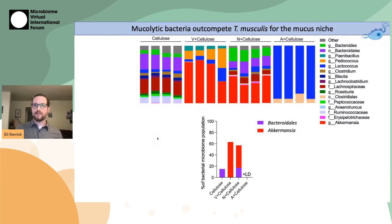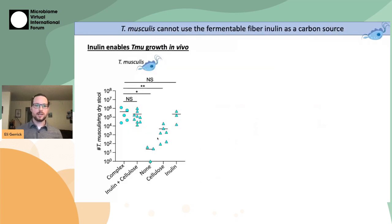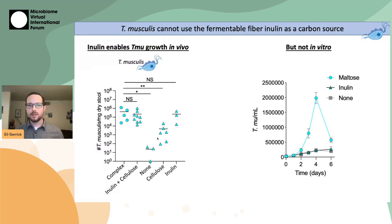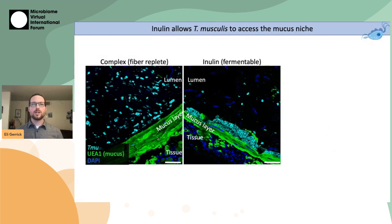I then wanted to characterize the fiber-eating ability of T. musculus, and decided to look at inulin specifically because inulin rescued T. musculus colonization in the in vivo setting. I used my new in vitro culture capability to test whether the protist could eat inulin, and was really surprised to see that the protist would not grow on inulin in vitro. This was a confusing result until I looked at protist localization in vivo again, which showed that on the inulin diet, the protists are not in the lumen where we'd expect them if they were eating fiber — instead, they were tightly co-localized to the mucus layer, reminiscent of fiber-starved mice.